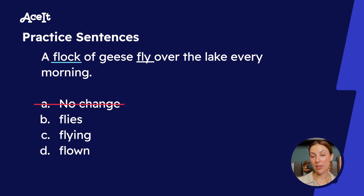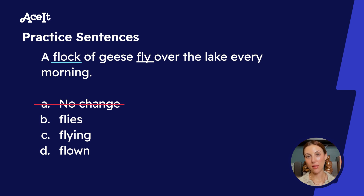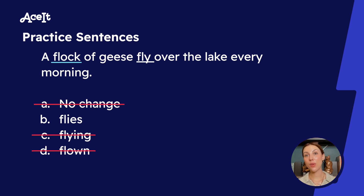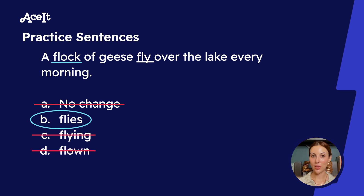Next, 'flies' — we see that S there, so we know it is in fact singular, so that could be our choice. 'Flying' doesn't quite make sense grammatically within this sentence, so we eliminate it. 'Flown' also doesn't fit grammatically. If you're confused about why C and D are not correct, please refer back to our previous video on verb tenses. Now that we've eliminated A, C, and D, we know that B, 'flies,' is our correct choice. So the sentence becomes: 'A flock of geese flies over the lake every morning.'